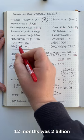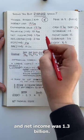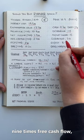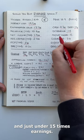Free cash flow over the last 12 months was 2 billion and net income was 1.3 billion, so the stock is valued at 1.6 times revenue, 9 times free cash flow, and just under 15 times earnings.